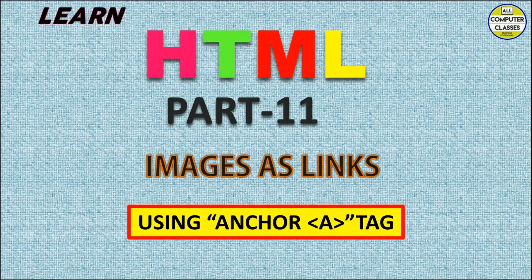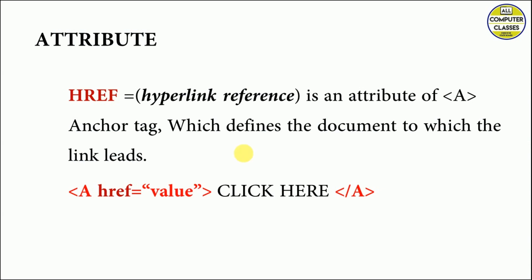Hello everyone, welcome back to All Computer Classes. We are studying HTML and today's topic is images as links using the anchor tag. You know that for creating any kind of link we use the anchor tag. Whatever is enclosed within the opening and closing anchor tag will appear on our screen. 'Click here' is the text that appears on the web page, and when you click it, it links to the specified value and opens that page. Now the topic is to create an image as a hyperlink.